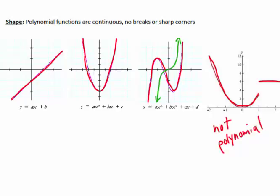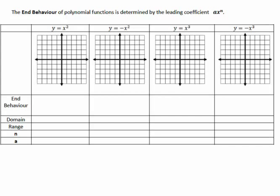Another piece of polynomial functions we'll concern ourselves with is end behavior, which is really determined by the leading coefficient. End behavior refers to the direction the arrows point on the polynomial function. Looking at a quadratic function — with a negative leading coefficient, the graph is reflected across the x-axis. The left side of the graph points up and so does the right side.